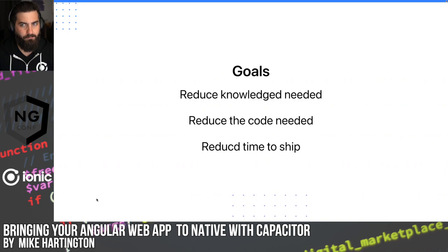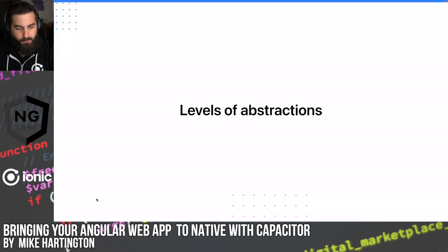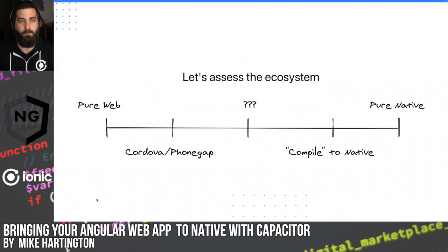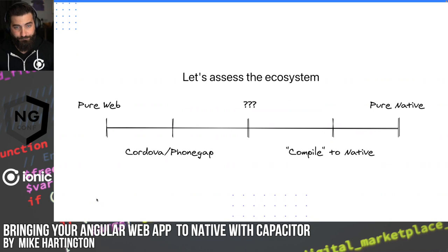When comparing cross-platform solutions, we should think less about which one is better and more about what level of abstraction they operate at. Think of a scale where we have a pure web app on one end and a pure native app on the other — where do our cross-platform solutions fall on that spectrum?